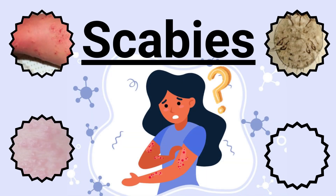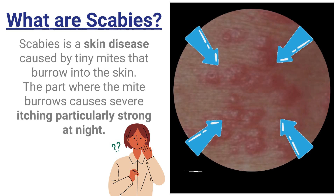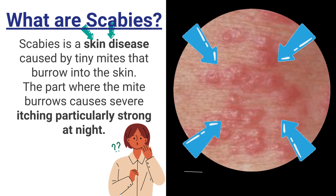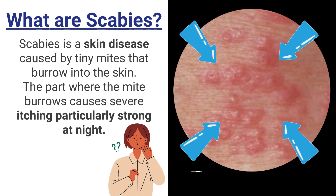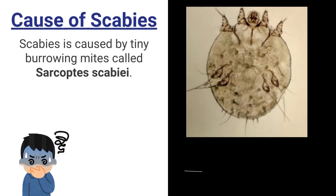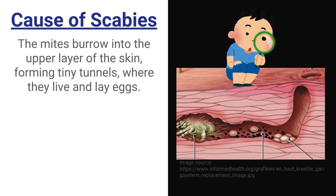Today we will discuss scabies, the most common skin disease worldwide. Scabies is a skin disease caused by tiny mites that burrow into the skin. The part where the mite burrows causes severe itching, particularly strong at night. Scabies is caused by tiny burrowing mites called Sarcoptes scabiae.